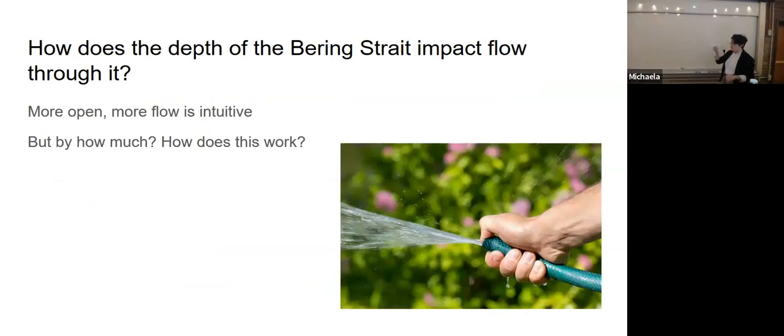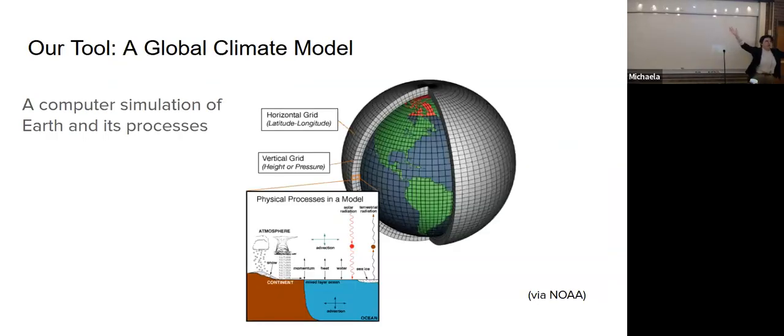To illuminate that question, I'm going to have you think about a garden hose. If you hold a garden hose and you don't put your thumb anywhere near it, some amount of water comes out. If you put your thumb over the end of the garden hose, you can stop the water. But if you put your thumb halfway over the garden hose, about the same amount of water comes out. At what point does that change happen? We need a computer model to figure that out.